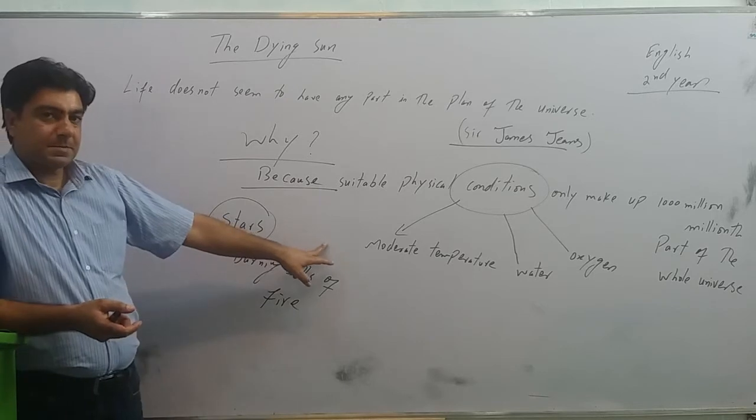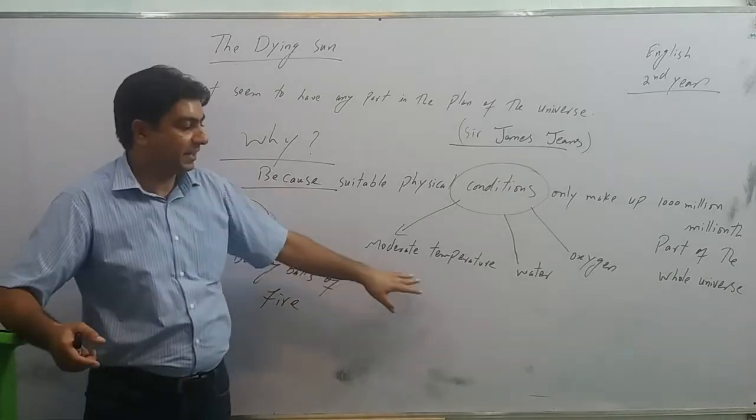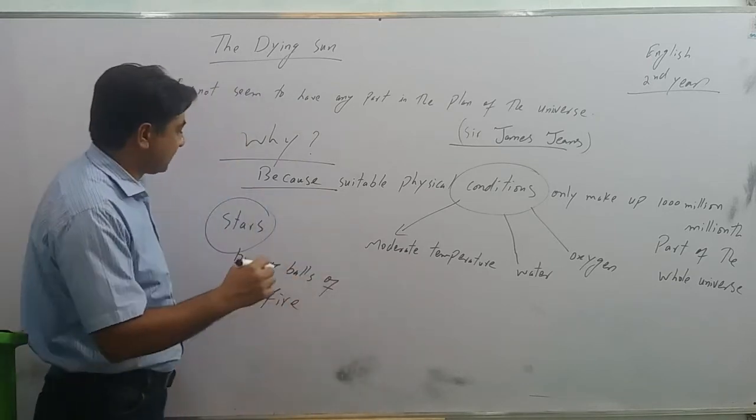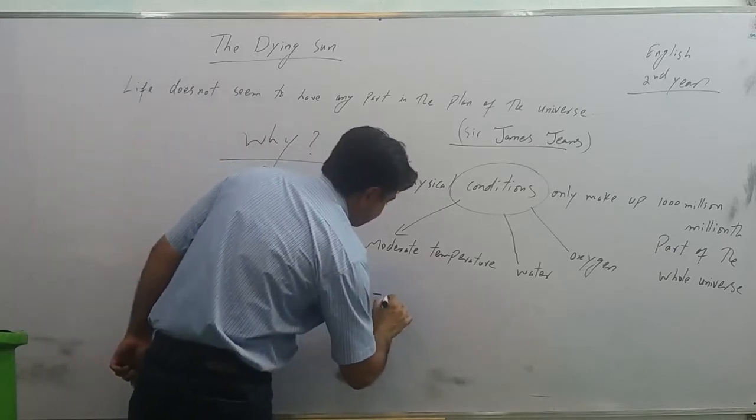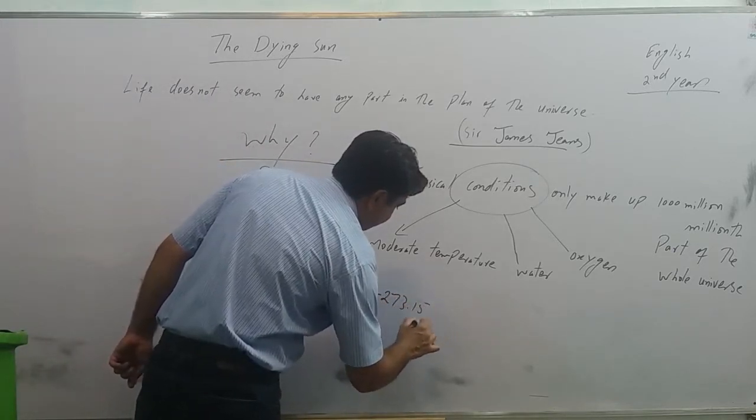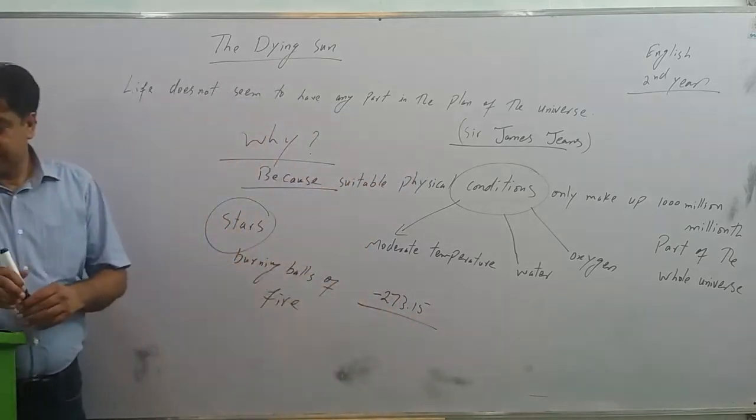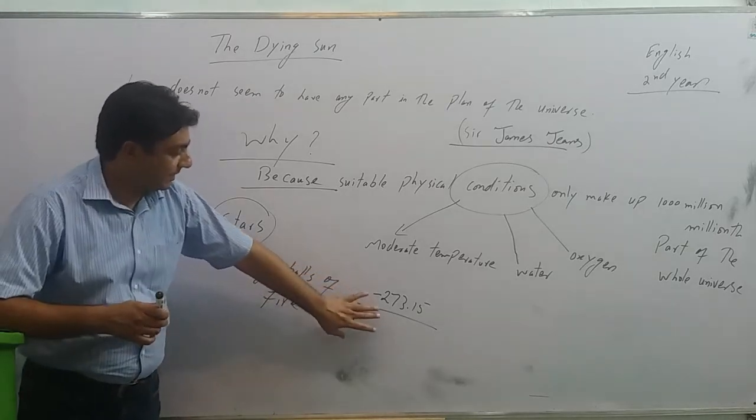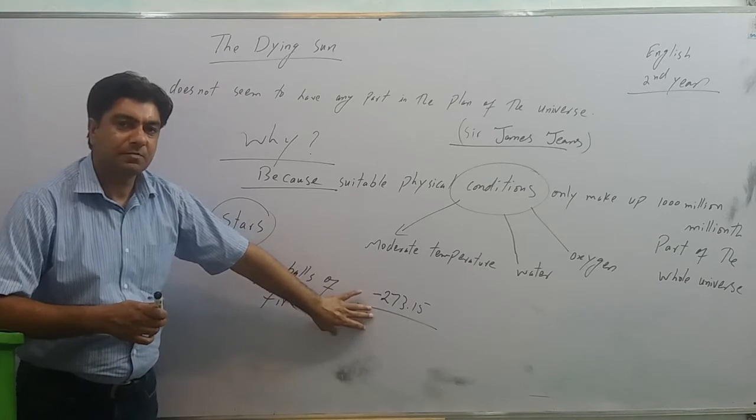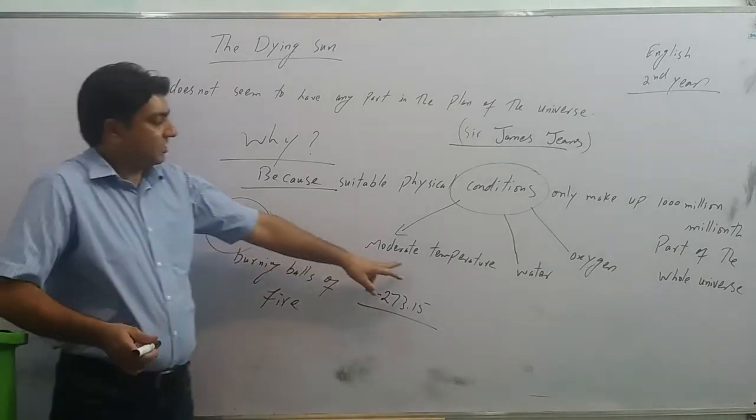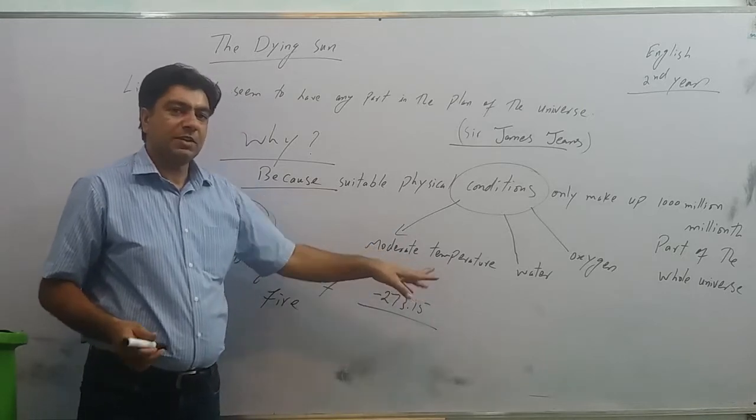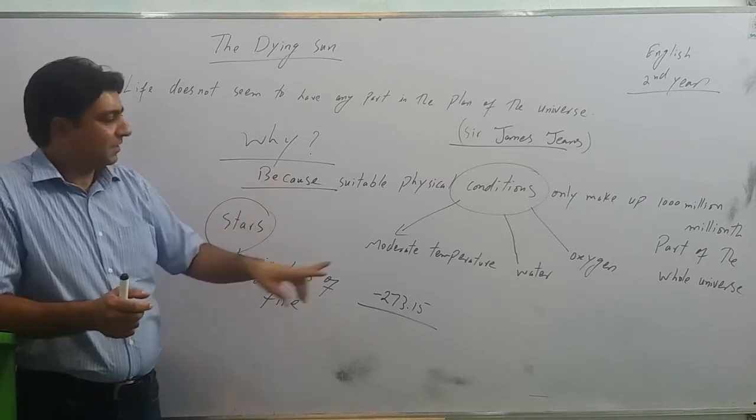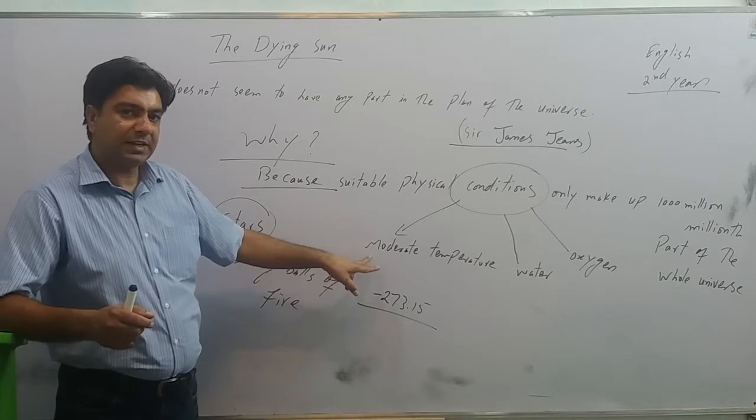Away from stars, it is extremely cold. Absolute zero. He says there are spaces in the universe where temperature falls to minus 273.15 degrees centigrade. So everything would be frozen there. By moderate temperature he means to say that the temperature should fall within the limits of keeping liquids at the state of liquid.